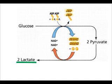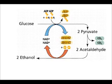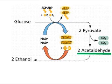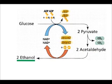In other organisms, like bacteria and yeast cells, alcoholic fermentation will occur, where the glucose is broken down into 2 pyruvate molecules, which then go on to become 2 acetaldehyde molecules, which are again converted into 2 ethanol molecules. This is the process by which yeast cells are able to make beer and wine.